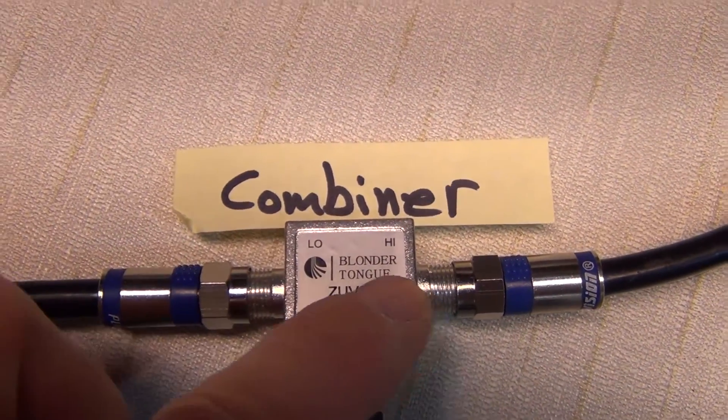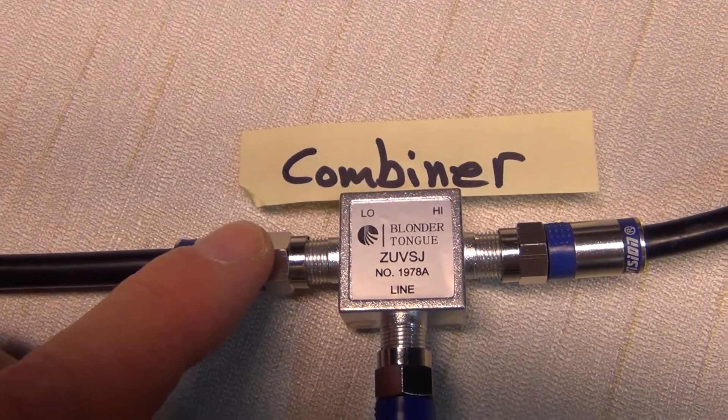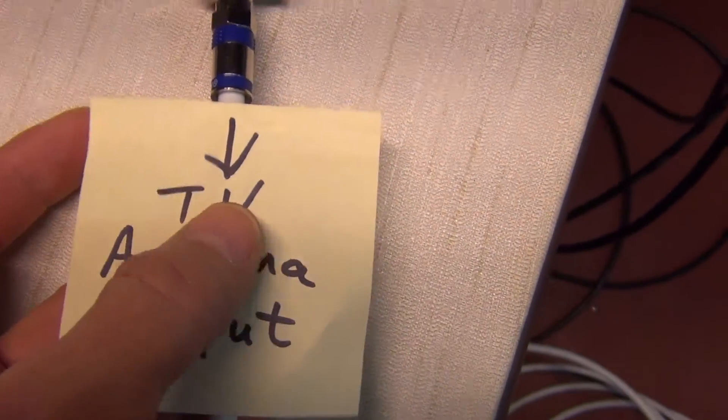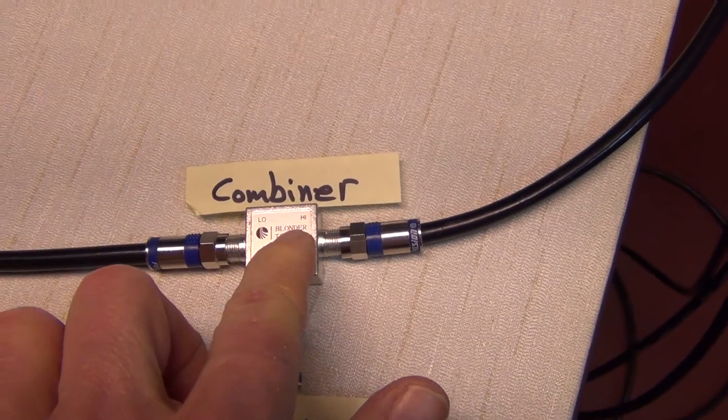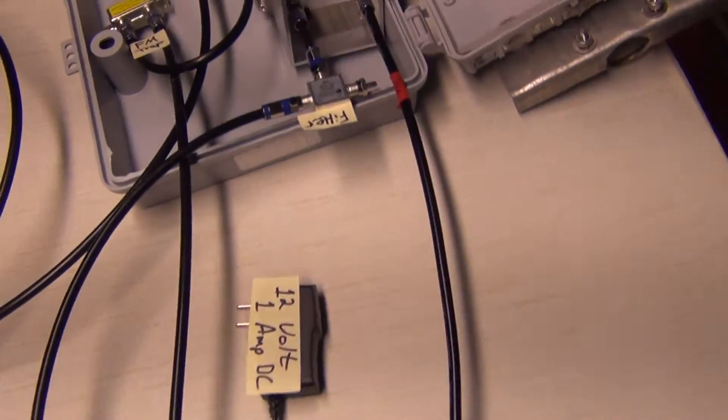And the high side, which is the UHF signal is going to combine with the VHF from the other amplifier. And then this goes to your TV, right here. So to get my UHF and VHF to come back again.